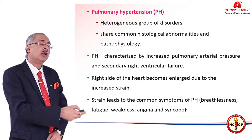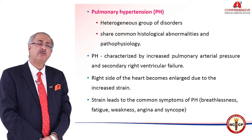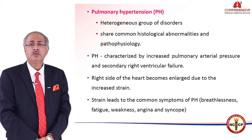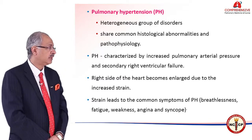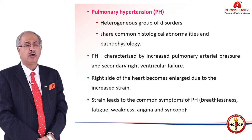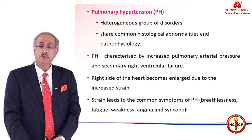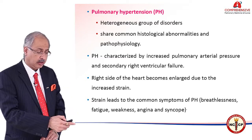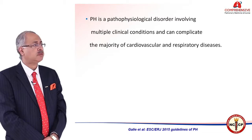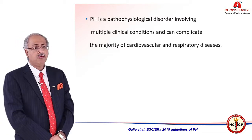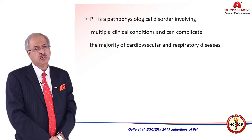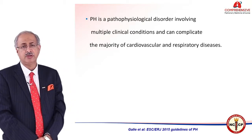This strain or hypertrophy of the right ventricle can also precipitate features like angina; persons can feel shortness of breath, and there can also be raised elevation of JVP along with pedal edema and hepatomegaly. Therefore, pulmonary hypertension is a pathophysiological disorder involving multiple clinical conditions and can complicate the majority of cardiovascular and respiratory diseases.